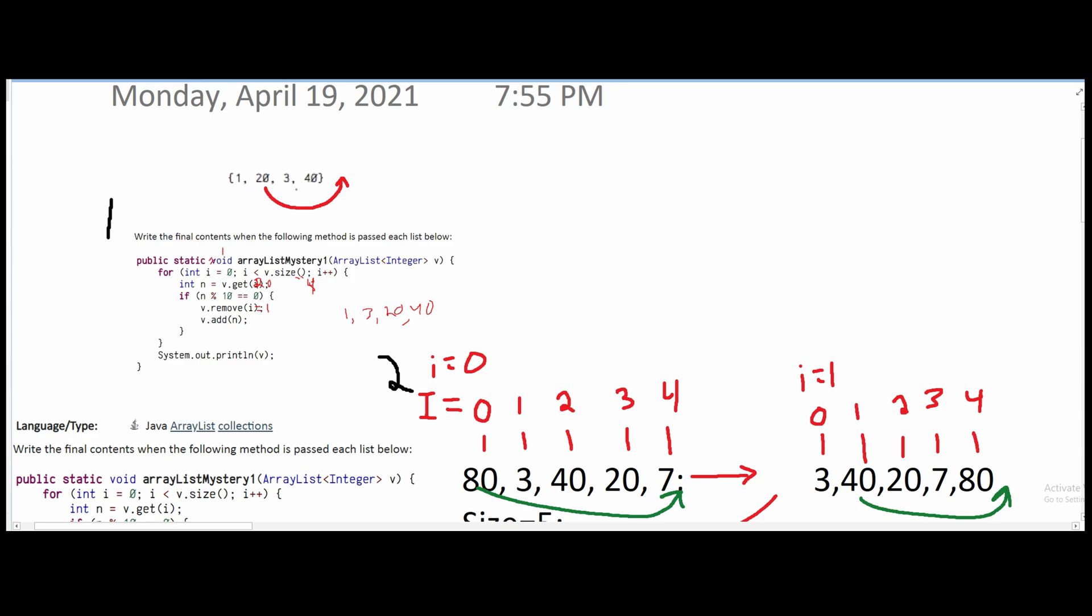Now we look at the next one, and that's 3. After we look at 3, since it is odd, we're just going to leave it there. We're going to look at 40. Since 40 is an even number, we're going to add it to the back. So that's going to leave us with 1, 3, 20, 40.